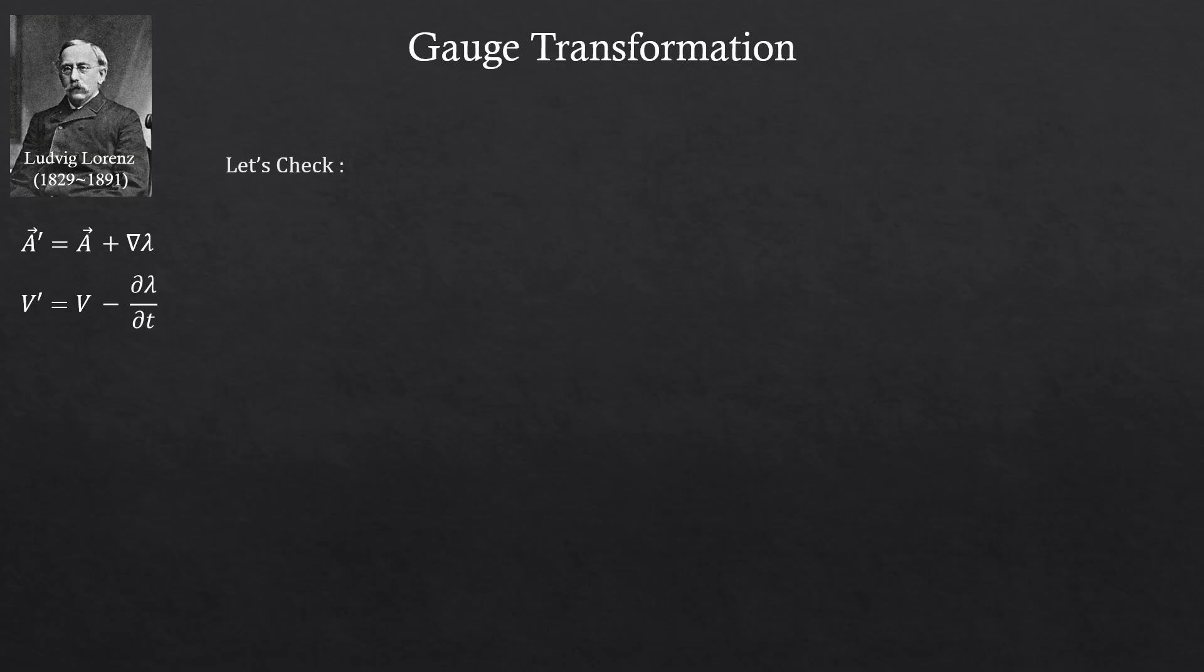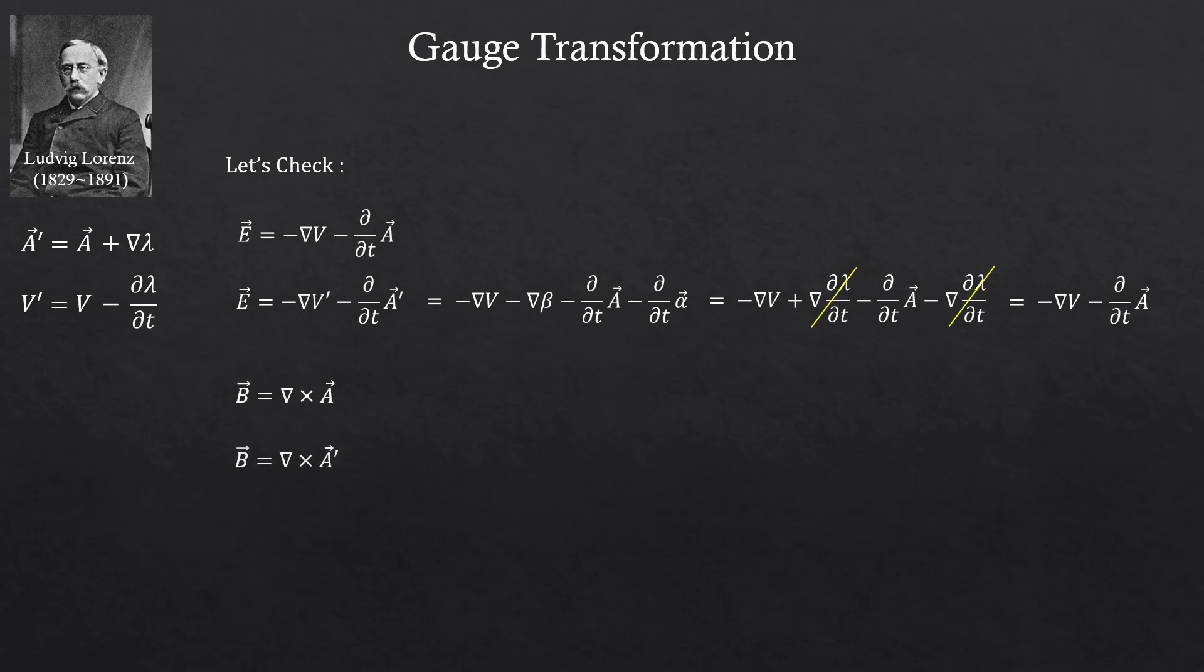Let's check if we really get the same electric field. Take a look. The new potentials didn't affect the electric field, right? Now, the magnetic field. This one as well. We still get the same magnetic field. So, this means that there can be different potential pairs that give us the same electric and magnetic fields.